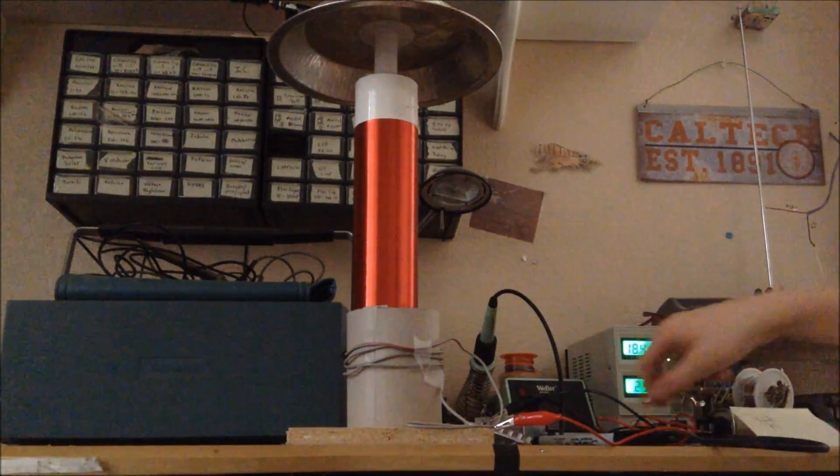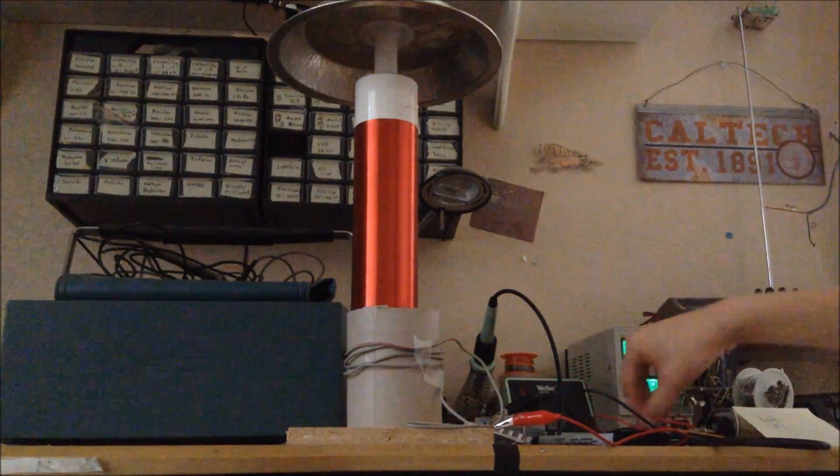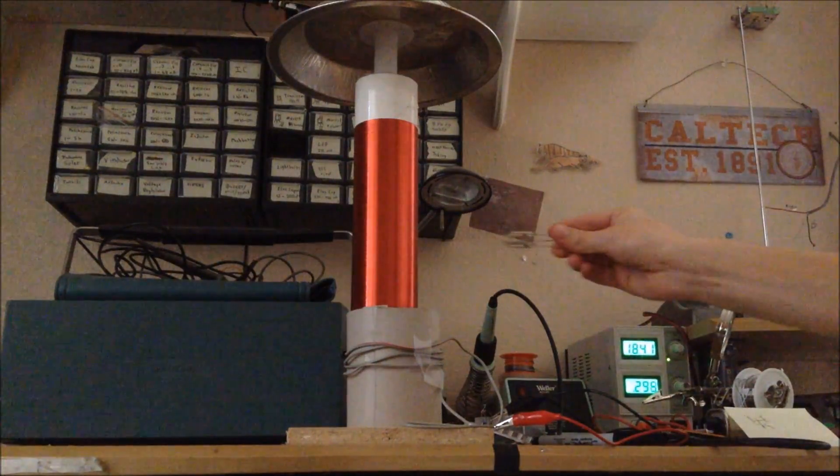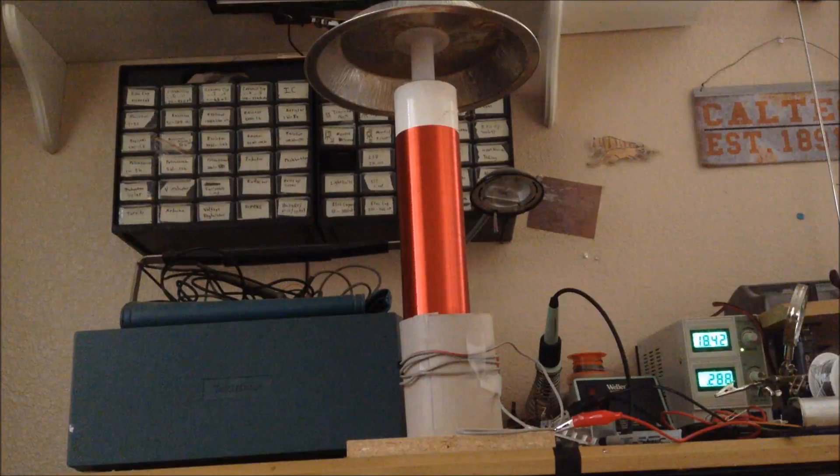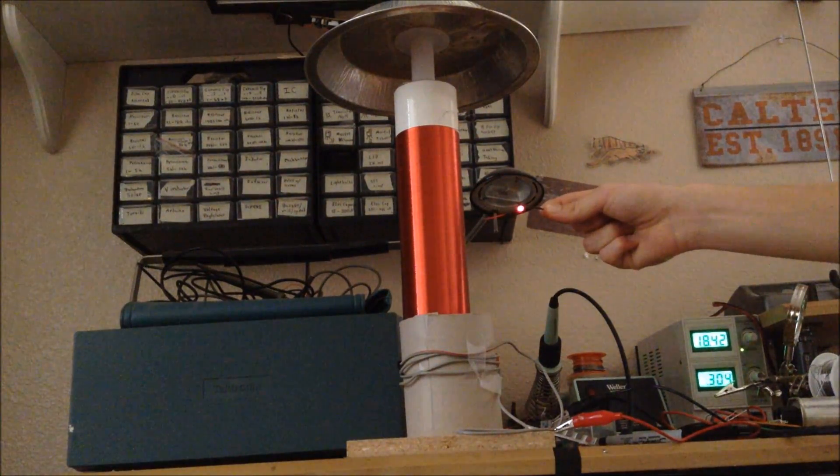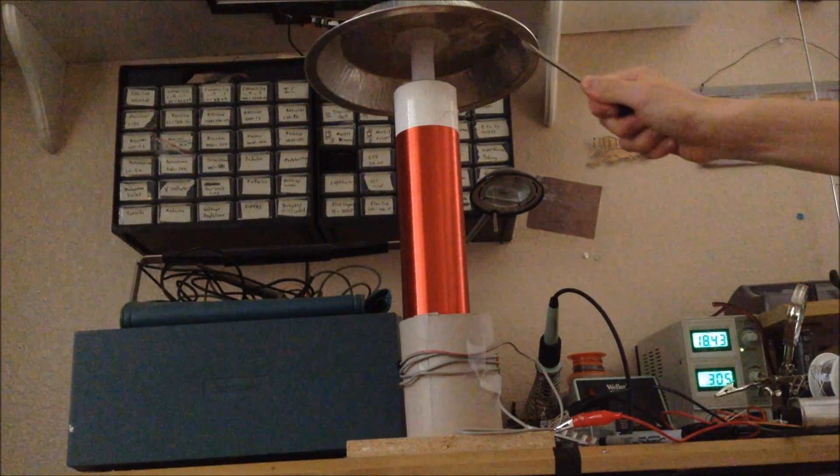It can also light various other things, such as this neon light bulb. The Slayer Exciter can also light LED light bulbs, and you can use it to create some fairly large sparks.